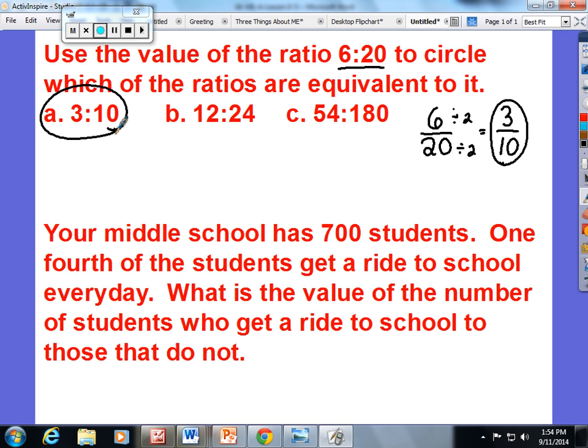Okay, so I go back to my list. 3 tenths is in it so I'm going to circle it - those two ratios are equivalent. Now I have 12 24ths. I'm going to take my value 3 tenths and set it equal to 12 24ths to see if they have the same value. 3 times 4 gives me 12 and whatever I do to the top of a ratio I must do to the bottom, so no these are not equivalent.